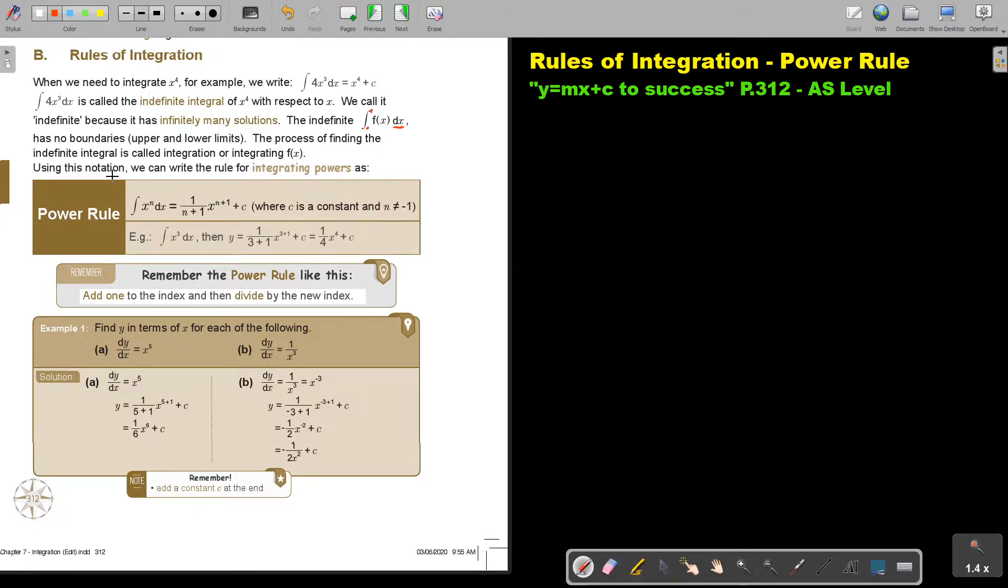Using this notation, we can write the rule for integrating powers as: integral of x to the power n dx equals x to the power n plus 1, divided by n plus 1, plus c, where c is a constant. This is very important, but there's another rule if n equals negative 1.